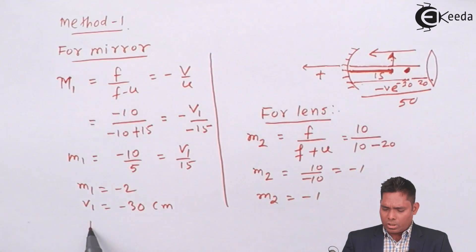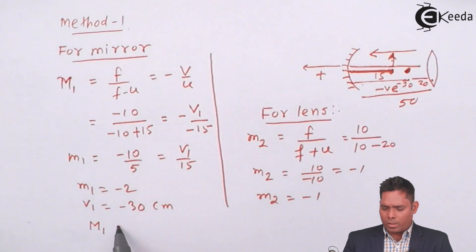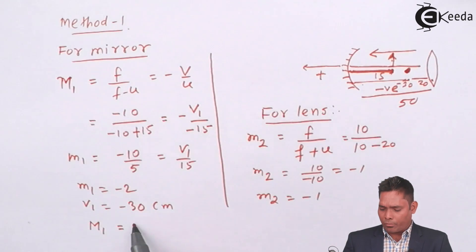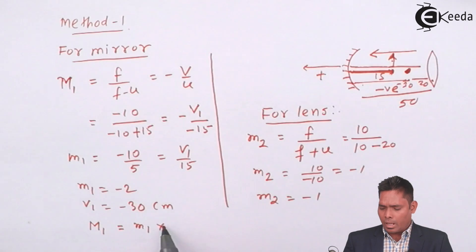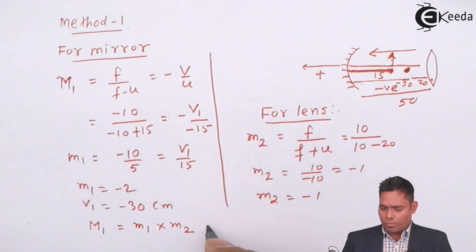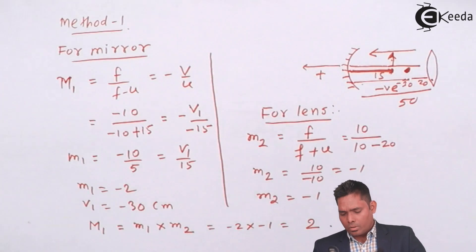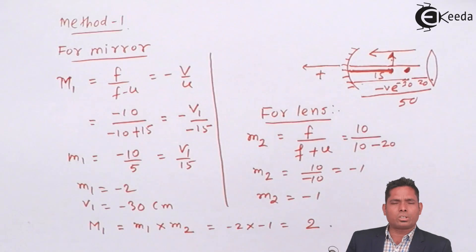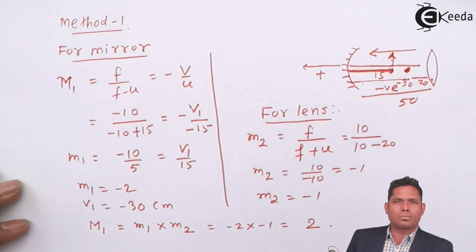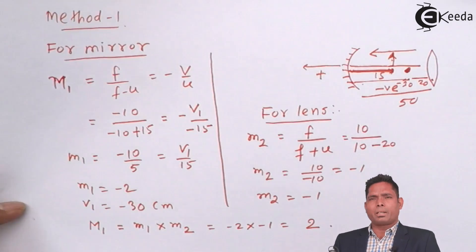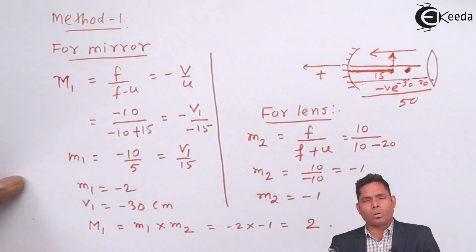So the combined magnification in the first case, M1 = m1 × m2 = (−2) × (−1) = 2. So when this combination is placed in air, the combined magnification M1 = 2.